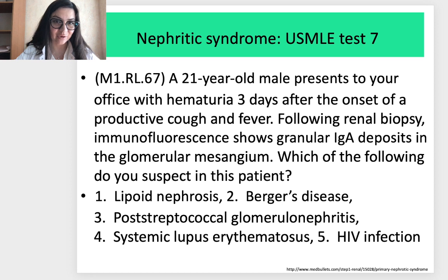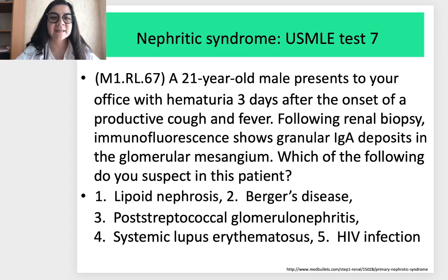USMLE Test 7 — nephritic syndrome: A 21-year-old male presents with hematuria three days after onset of productive cough and fever. Following renal biopsy, immunofluorescence shows granular IgA deposition in the glomerular mesangium. Which of the following do you suspect? Options: (1) Lipoid nephrosis; (2) Berger disease; (3) Post-streptococcal glomerulonephritis; (4) Systemic lupus erythematosus; (5) Hip infection.